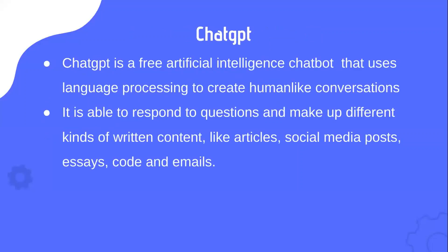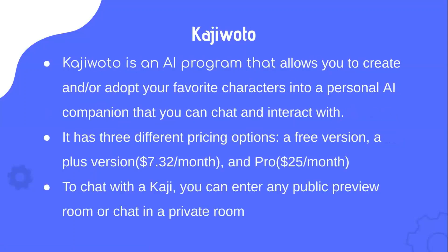ChatGPT is a free artificial intelligence chatbot that uses language processing to create human-like conversations. It is able to respond to questions and produce different kinds of written content like articles, social media posts, essays, code, and emails. ChatGPT is an AI program that also allows you to create or adopt your favorite characters into a personal AI companion that you can chat and interact with.